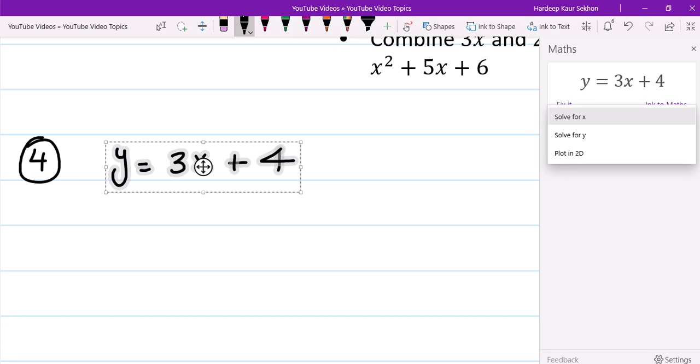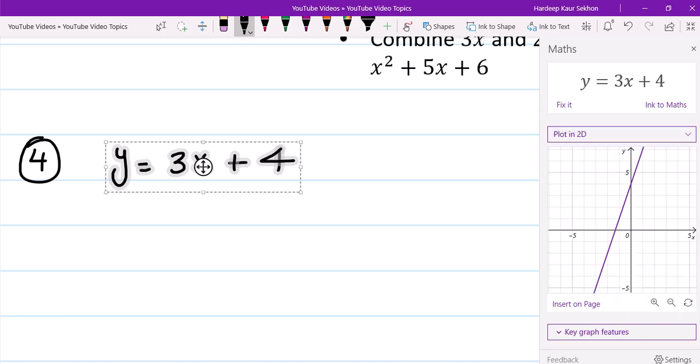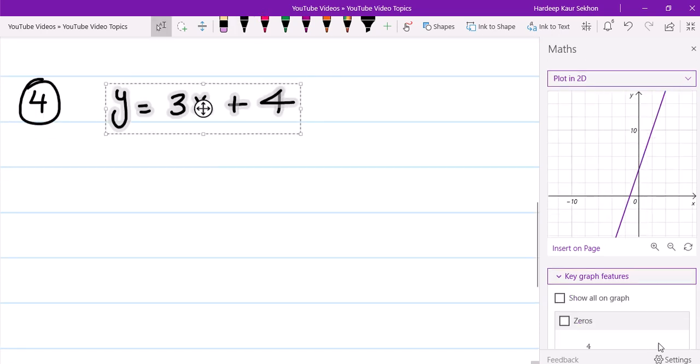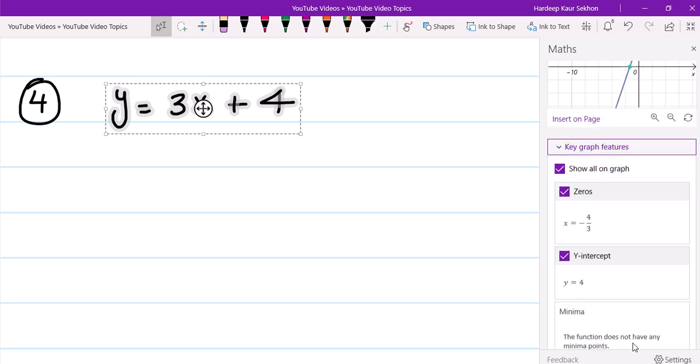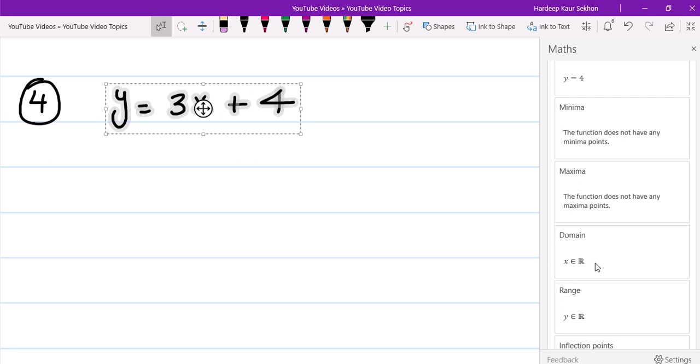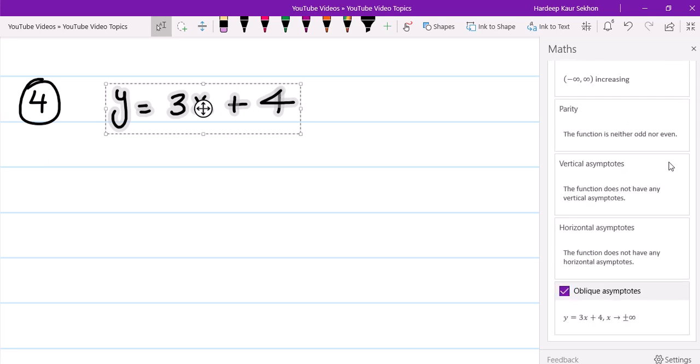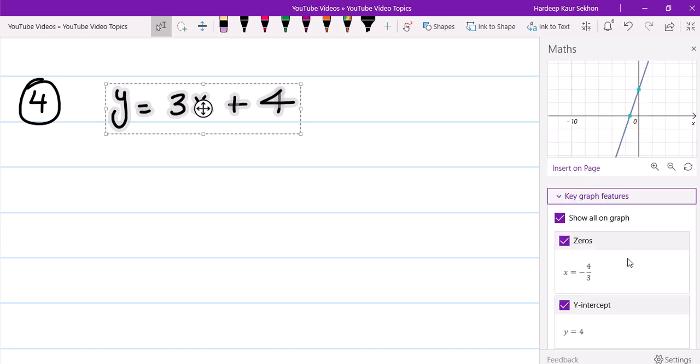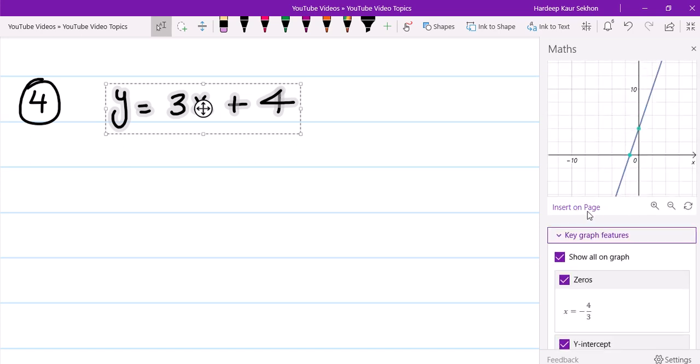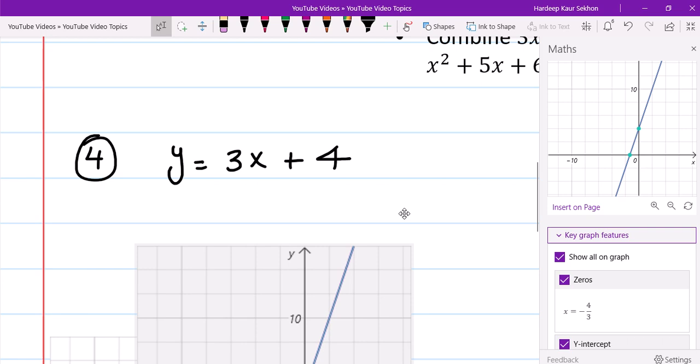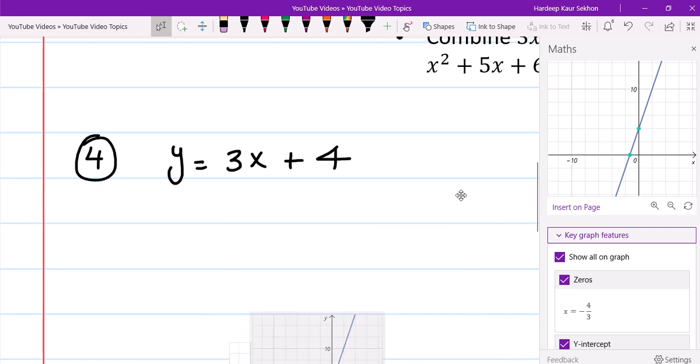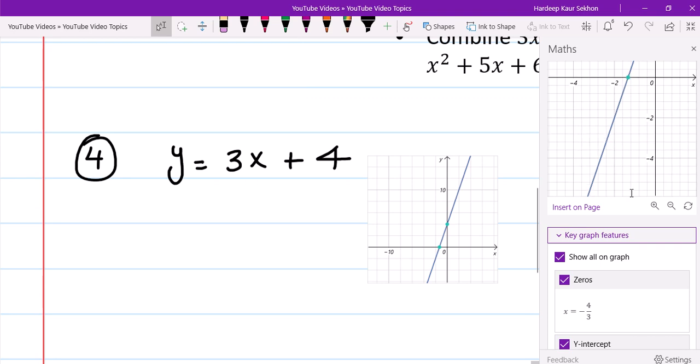It's the correct equation. I don't need to fix it. Plot, solve for x, solve for y—I'm going to plot in 2D, and here's my graph. Key graph features here—if you want to enable more options here, show all on the graph, your points here. If you mouse over it will tell you what is your x and what is your y. It kind of tells you what's the domain, what's the range here, and so many options here: vertical asymptote, parity, horizontal asymptote, and all the options come here. And then you can just click on insert on a page. It will show up right here.